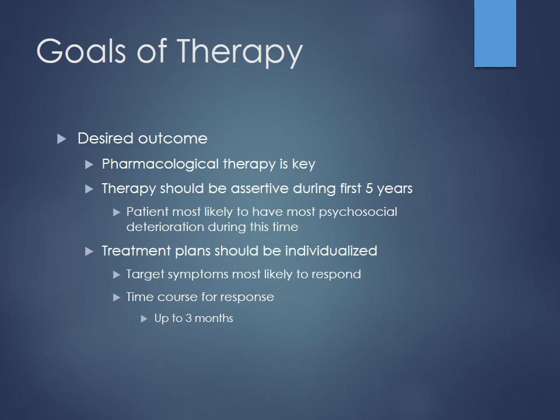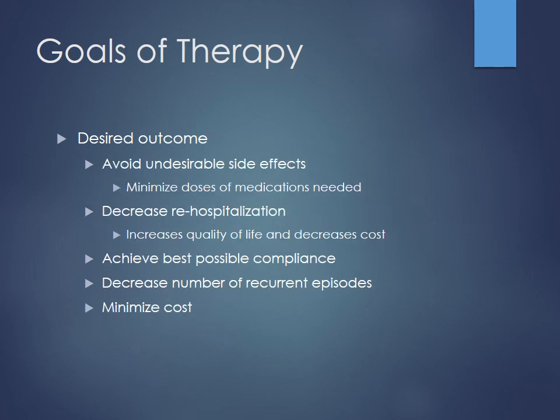These drugs are going to be much more laden with side effects than something like an SSRI — not only cognitive impairment but many metabolic effects as well. Goals include minimizing adverse effects, decreasing hospitalization to improve quality of life and cut costs, achieving best compliance through appropriate dosage forms like IM administration, and minimizing cost. A lot of new agents are starting to come out, especially second-generation atypicals.